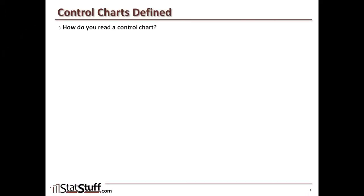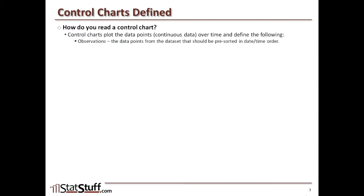Now let's look at a control chart and talk about its different components. Control charts plot data points for continuous data over time. The first primary component is observations — each of the data points from the data set. They're pre-sorted and must follow in a date-time order.